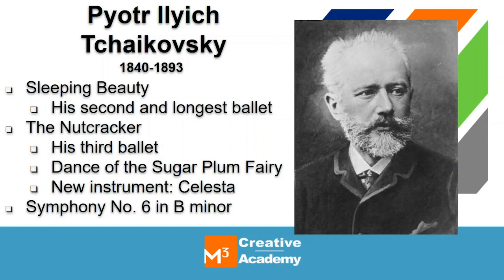The fourth movement is supposed to be exciting, sort of like the grand finale of the whole piece building up to that point. But Tchaikovsky decided to make his fourth movement an adagio, which is a very slow tempo, and the symphony just fades away instead of ending with a bang.